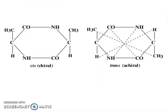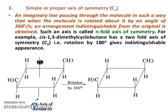Now, simple or proper axis of symmetry: an imaginary line passing through the molecule in such a way that when the molecule is rotated about it by an angle of 360-degree divided by n, an arrangement indistinguishable from the original is obtained. Such an axis is called an n-fold axis of symmetry. For example, cis-1,3-dimethylcyclobutane has a two-fold axis of symmetry C2 — that is, rotation by 180 degrees gives an indistinguishable appearance.